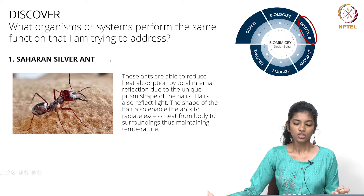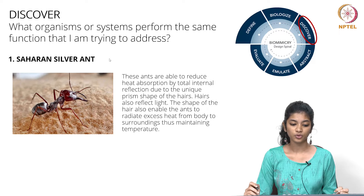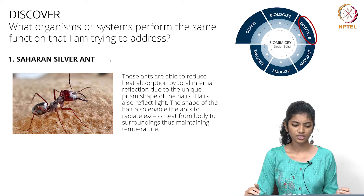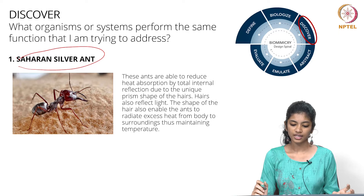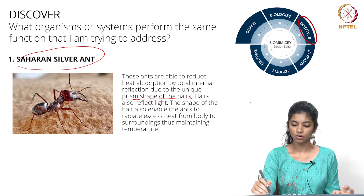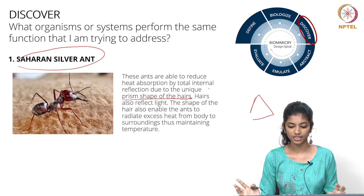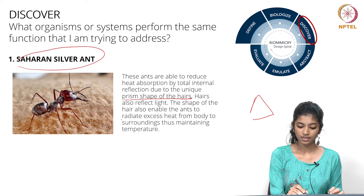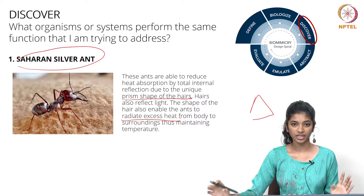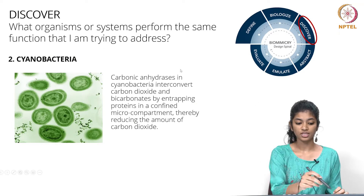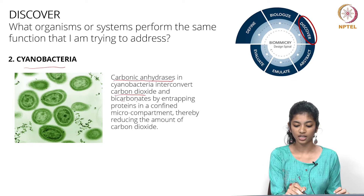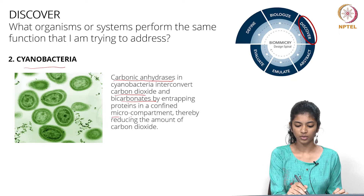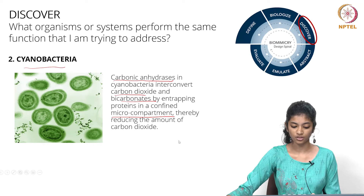Next is the discover step — what organisms or systems perform the same function I am trying to address? After a lot of research on AskNature and similar websites, I found the Saharan silver ant. These ants have prism-shaped hairs which, through total internal reflection, reduce heat absorption, reflect light, and enable the ants to radiate excess heat from their bodies, maintaining temperature. I also found cyanobacteria, which contain carbonic anhydrases that convert carbon dioxide to bicarbonates by trapping it in micro-compartments, reducing the amount of carbon dioxide.